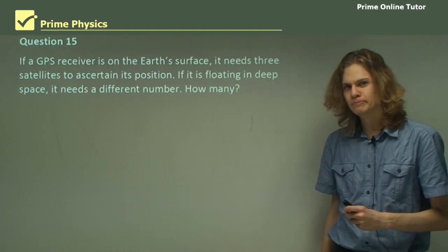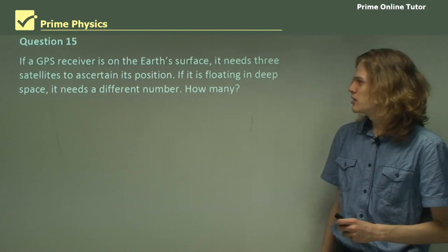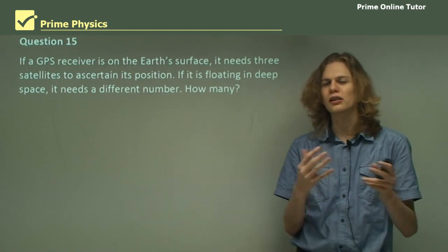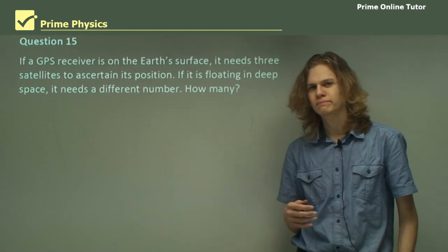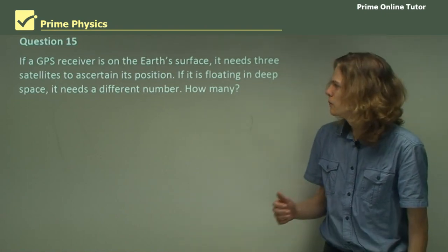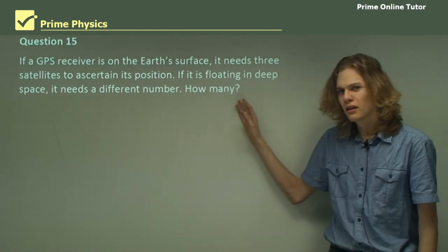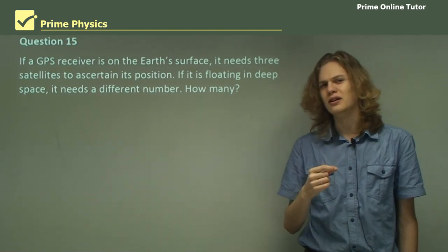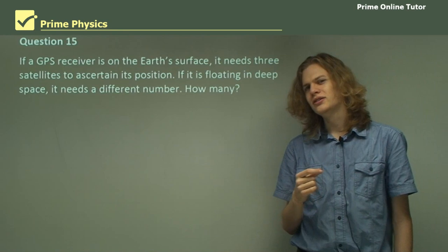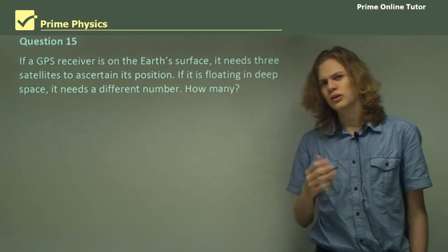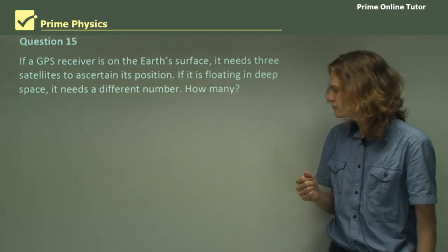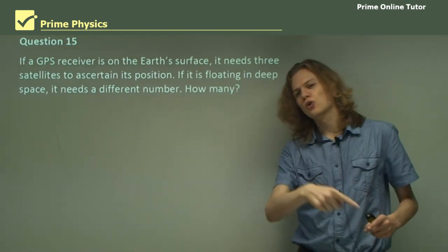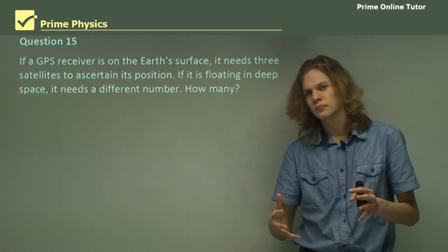Finally, question 15. If a GPS receiver is on the Earth's surface, it needs exactly three satellites to ascertain exactly where it is. But if it's floating in deep space, it doesn't need three. It needs a different number. So what is this number? Well, let's think about this for a moment. When we're on the surface of the Earth, then one satellite gives us a circle of possibilities on the surface. But if we're in deep space and we know our distance from a satellite, that means that we could be that distance away from the satellite in any direction. We could be in a sphere around that satellite.